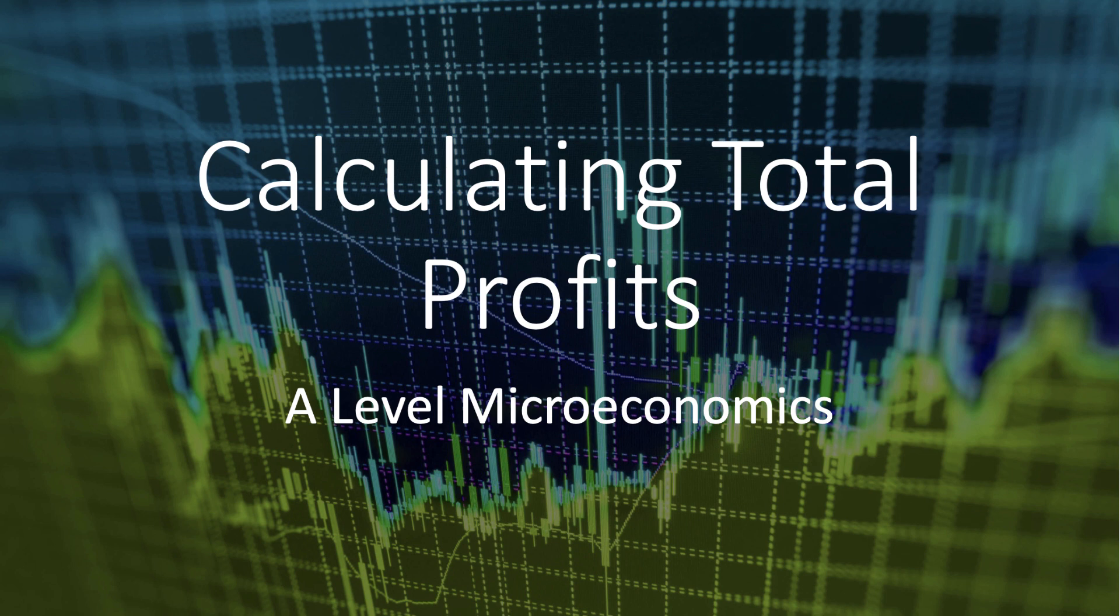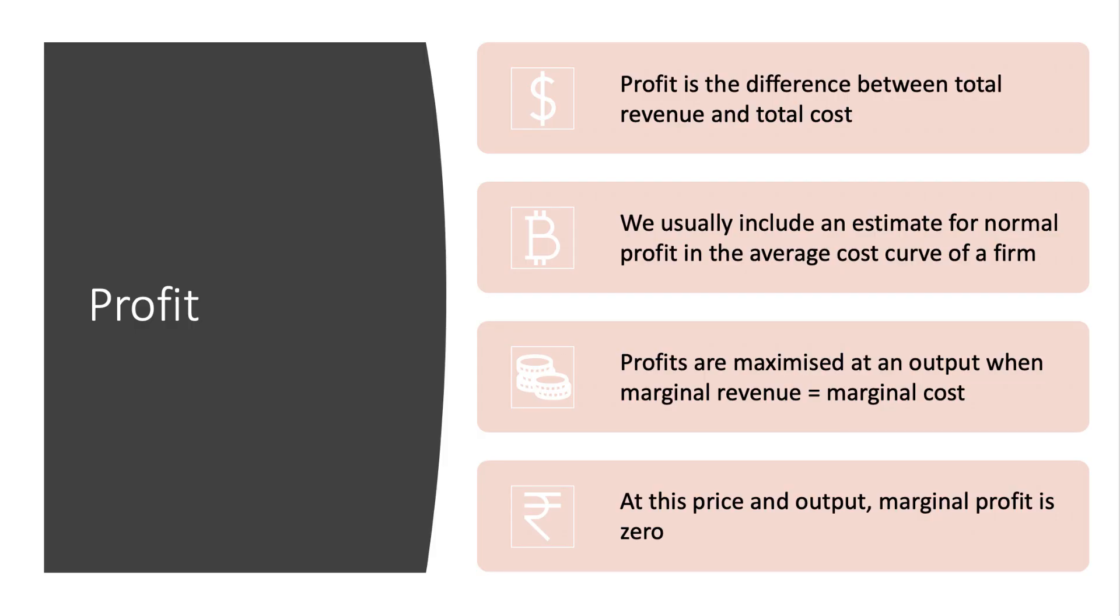Quick reminder on the concept of profit, which is the difference between total revenue and total cost. We normally include an estimate for normal profit, the opportunity cost of capital, in the average cost curve of a firm.